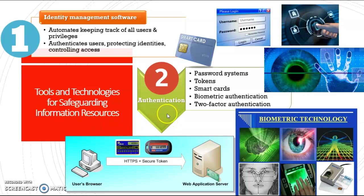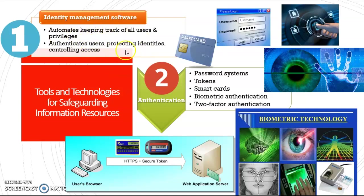Hi class, so we meet again. This is about the tools and technologies for safeguarding information resources. We have six items. The first one is about identity management software — this is to authenticate you as the user so you can access certain parts of the system.